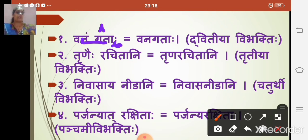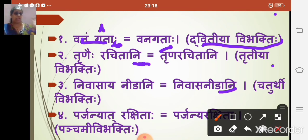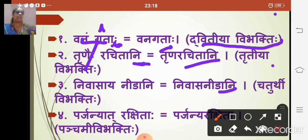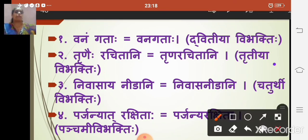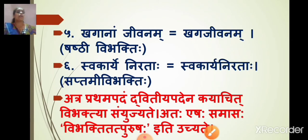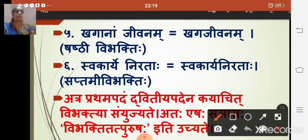In the samasa formation process: the first component's vibhakti ending is dropped. For gatha, dvitiya vibhakti ending is dropped. For trunahi rachitani, the trutiya ending '-hi' is dropped, giving 'truna.' For nivasaya, the chaturthi ending is dropped, giving 'nivas.' For parjanyat rakshita, the panchami ending '-at' is dropped. For khaganam jivanam, the shashti '-nam' is dropped to give 'khagan.' For svakarya nirata, the '-a' ending is dropped to give 'svakary.'